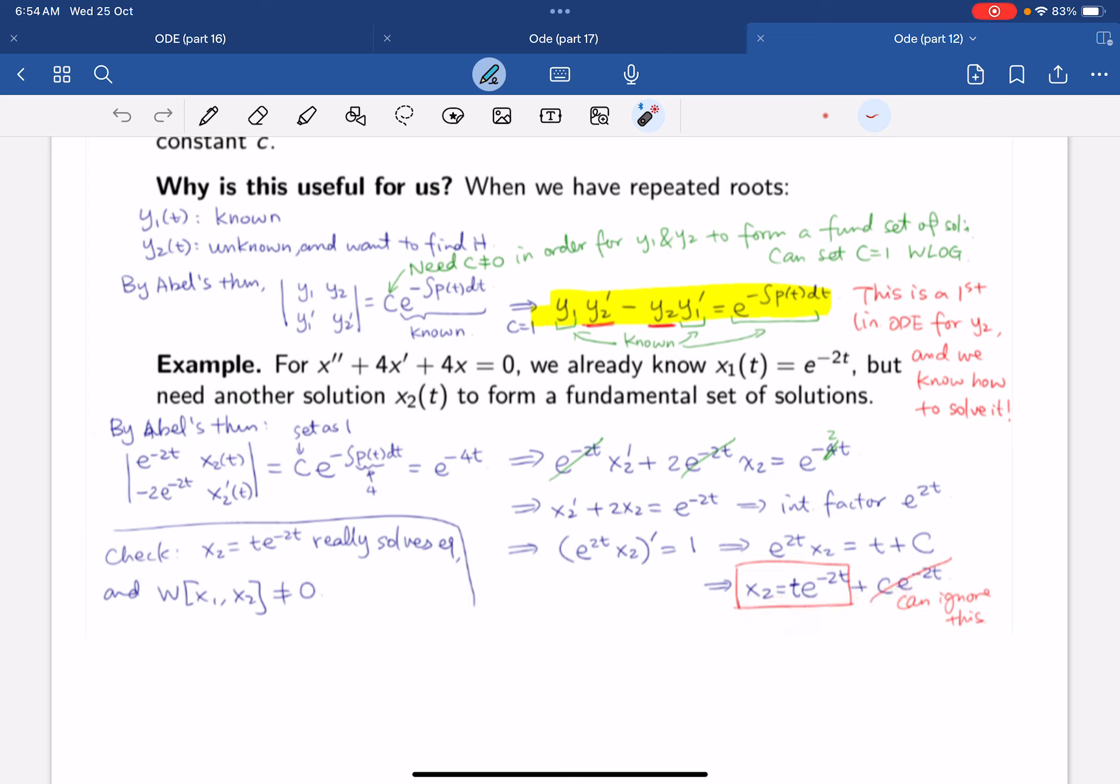We can use the integrating factor formula, and this gives us x2 equals to te^(-2t) plus ce^(-2t). But ce^(-2t) is one of the solutions already, so this part we can ignore. This will form our second solution. You can also just check that this really solves the equation and the Wronskian between x1 and x2 now is non-zero.